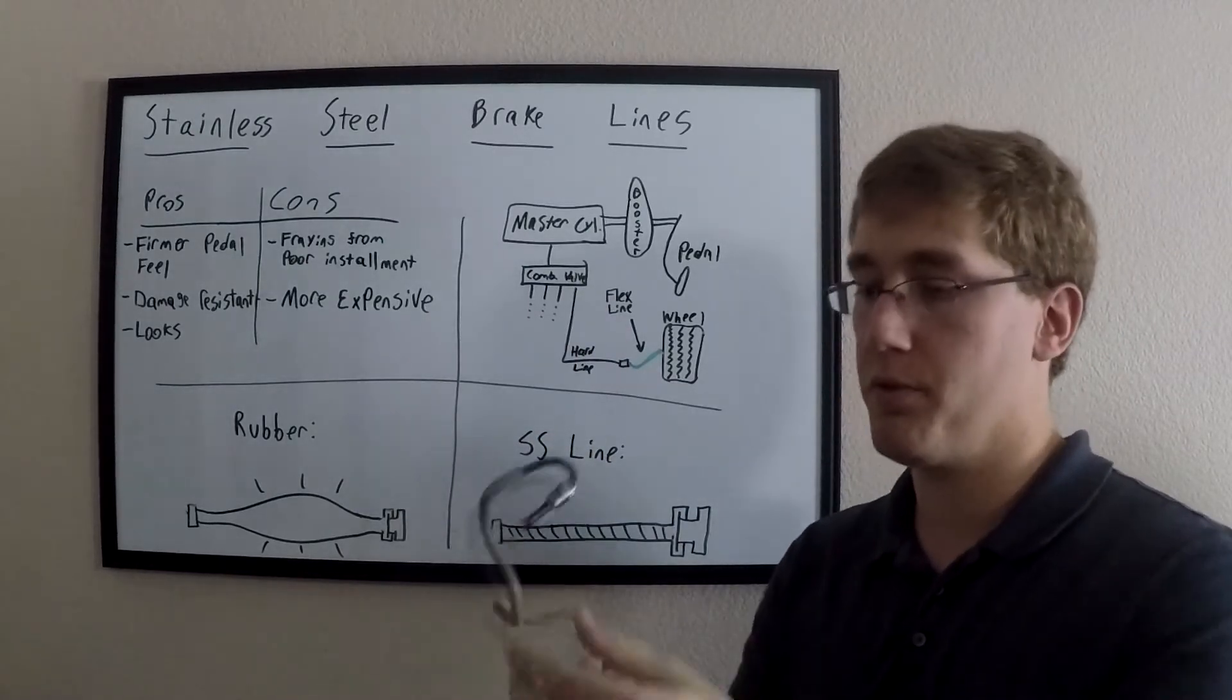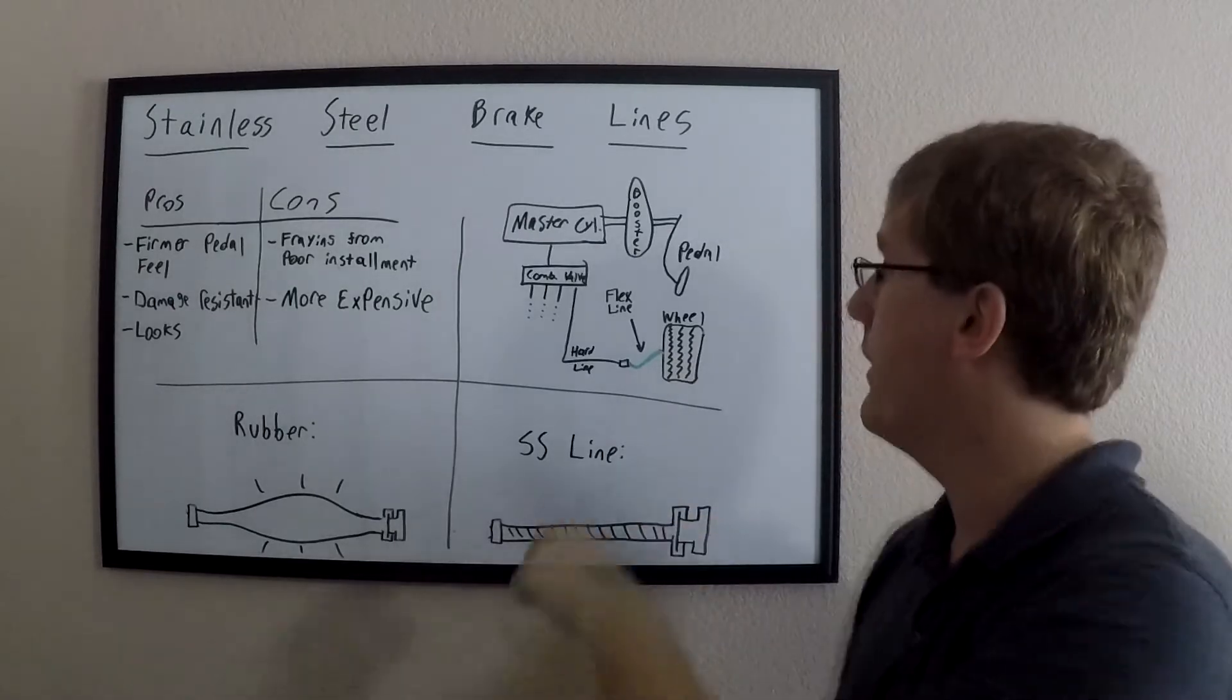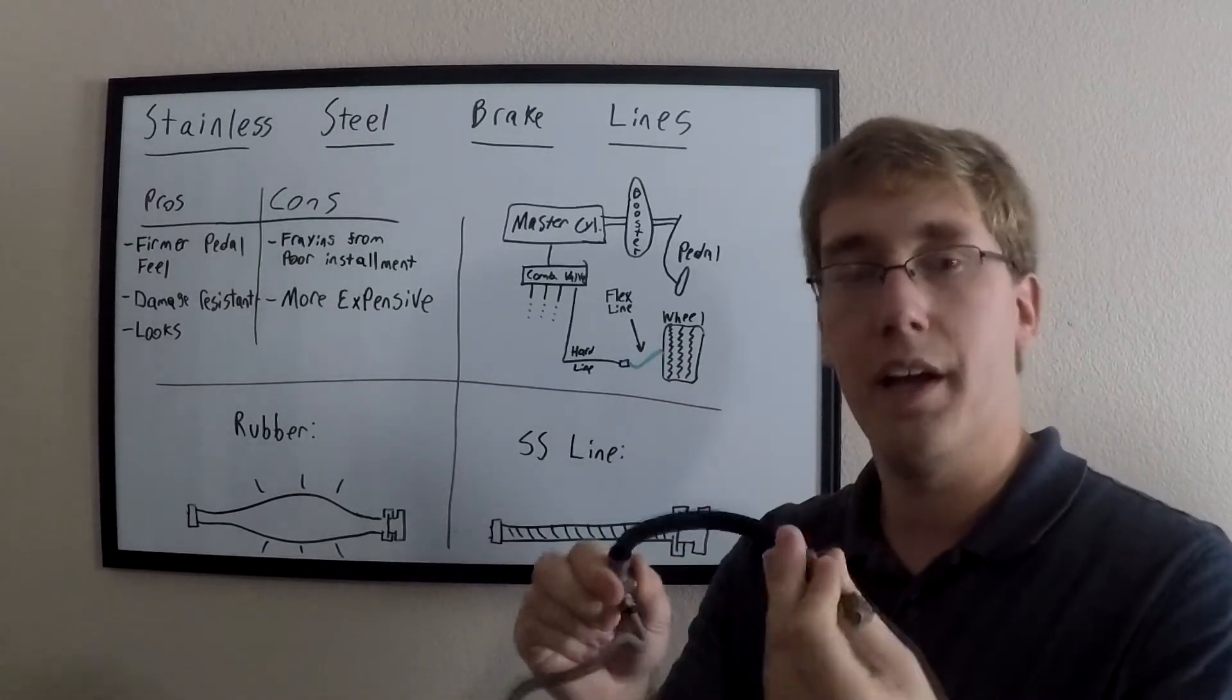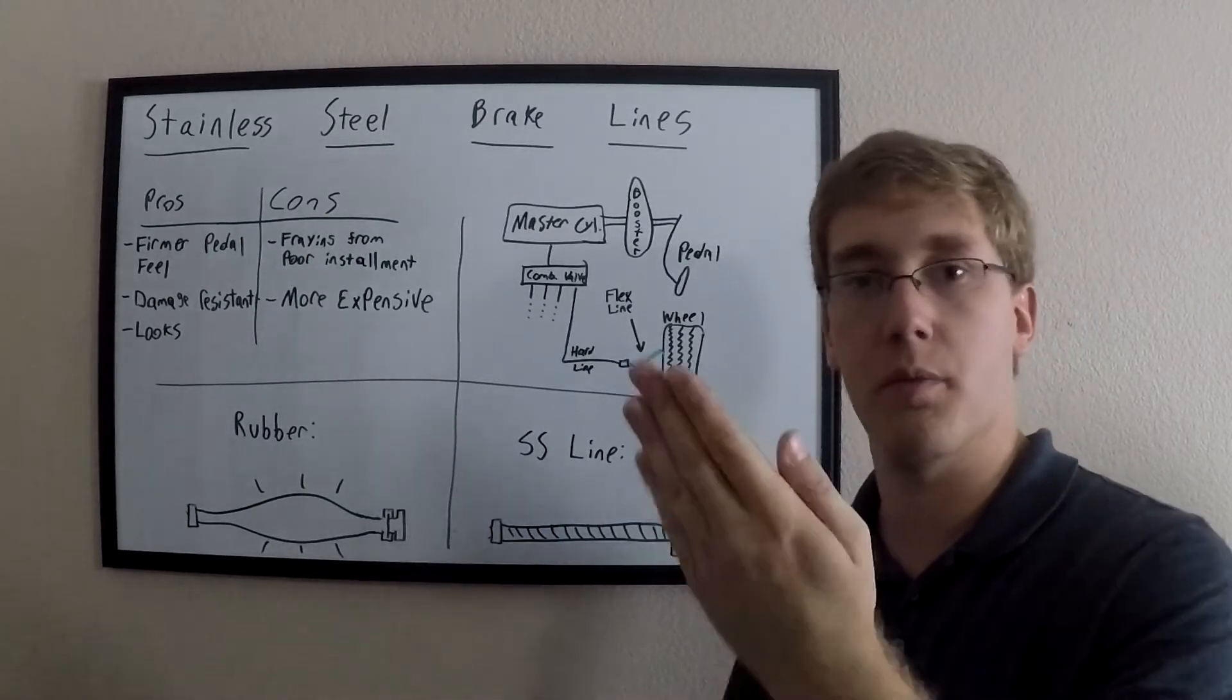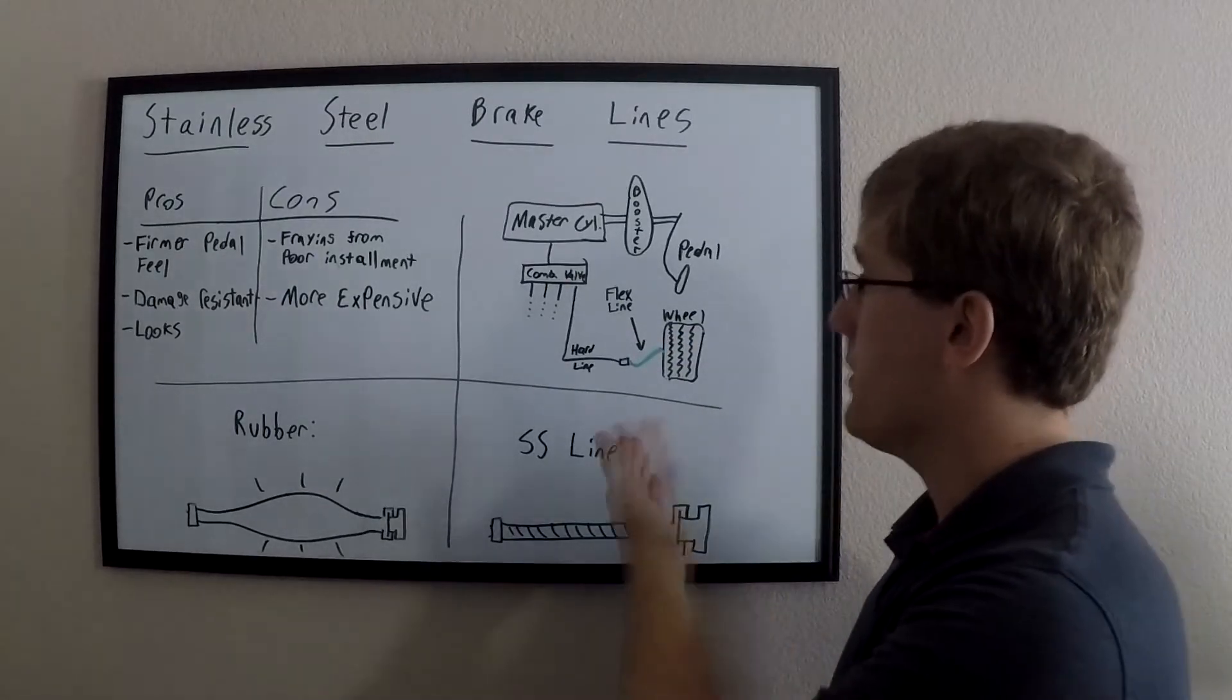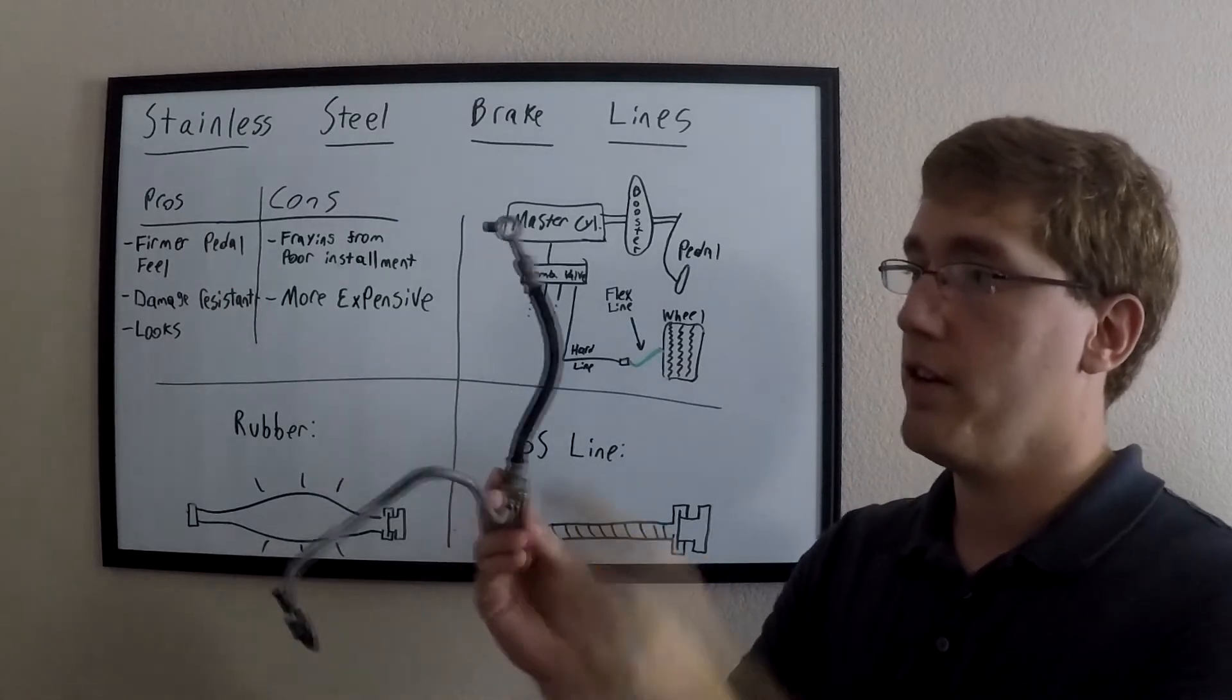Initially it sends this pressure through these metal hard lines throughout the car which have pretty much no flex in them, and then those eventually run to a flexible line that runs to the wheel. It needs to be flexible to accommodate for the movements of the wheel, whether it be from steering or deflection from hitting a bump. And specifically we will be looking at that flex line today, which on most vehicles from the factory is rubber.